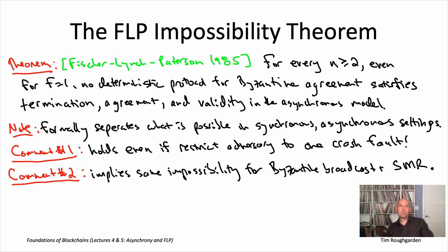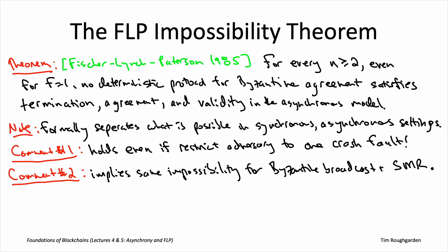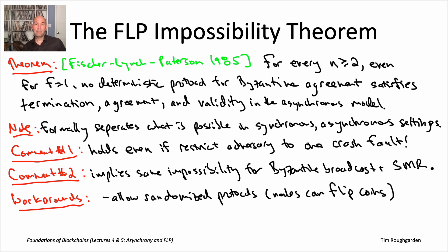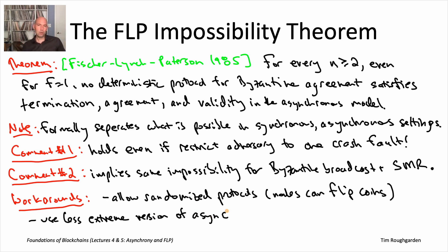Never forget: when someone shows you an impossibility result like this, the point is not to discourage you from trying to solve the problem or come up with good consensus protocols. Rather, the goal is to make sure everybody is properly educated about what essential compromises are required. In light of this impossibility result, we have to change something. One workaround is to use randomized protocols, where nodes can flip coins locally to decide which messages to send. The other approach is to strengthen the assumptions — which is what we'll do in lecture six, where we pull back from this extreme form of asynchrony and work in what turns out to be a sweet spot: the partially synchronous model.